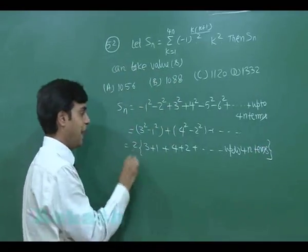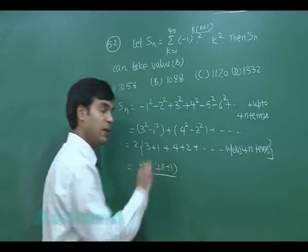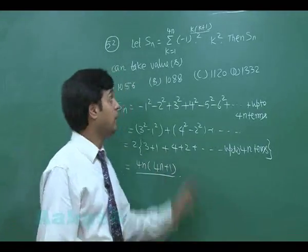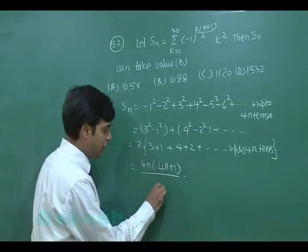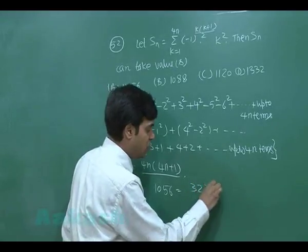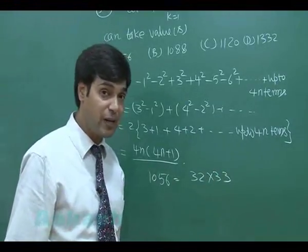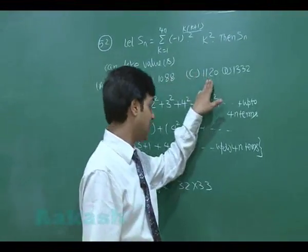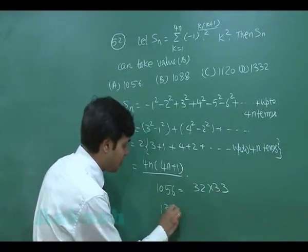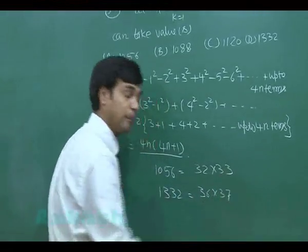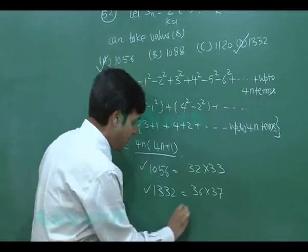The sum reduces to finding the sum of 4n natural numbers, giving a result of the form 4n(4n+1). Checking option A: 1056 = 32×33, which is of the form 4n(4n+1) with n=8. Option D: 1332 = 36×37, also of the form 4n(4n+1) with n=9. Options B and C cannot be expressed in this form. Correct answers are A and D.